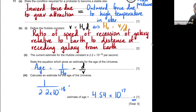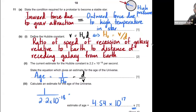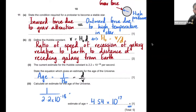To estimate the age of the universe, the equation is age = 1/H₀. Given the value of H₀, compute 1/H₀ to get the age in seconds. That covers the entire paper. Hope you enjoyed the solution and found it clear. Let me know if you have any questions or need clarification on any parts, and best of luck for your exams!